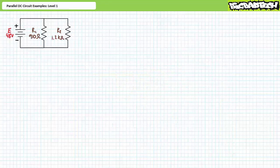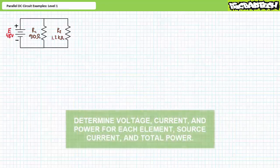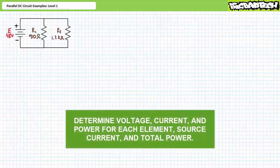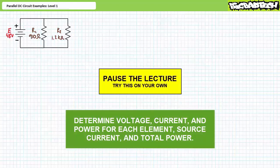Our first illustrated example features a 48-volt source in parallel with R1, a 910-ohm resistor, and R2, a 1.2 kilohm resistor. We're being asked to solve for the voltage drop across each element, the current through each element, the power dissipated by each element, the source current, and the total power. By all means, pause the lecture and try this on your own.